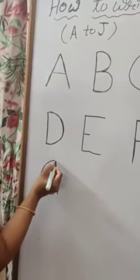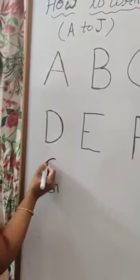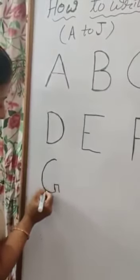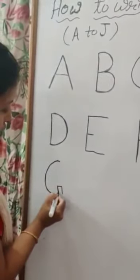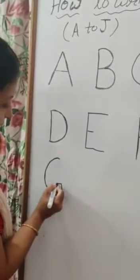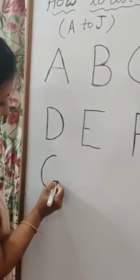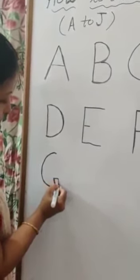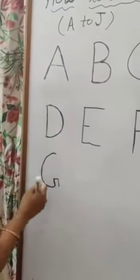Again I am going to repeat it. One half circle — aise half circle banana hai. Small standing line, small slipping line, one more standing line or straight line — makes G.